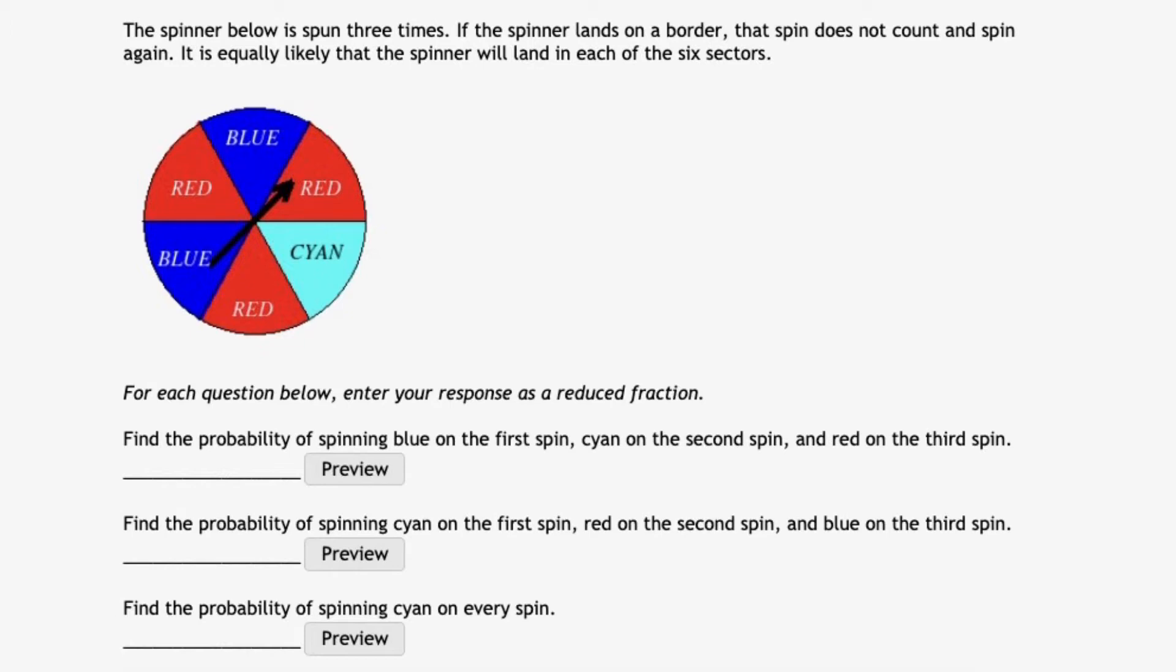First question: find the probability of spinning blue on the first spin, cyan on the second spin, and red on the third spin.